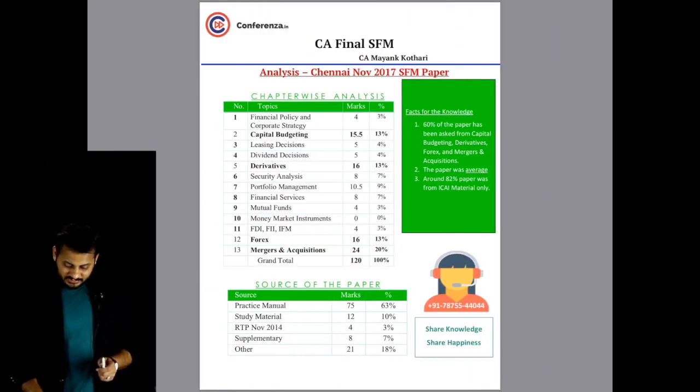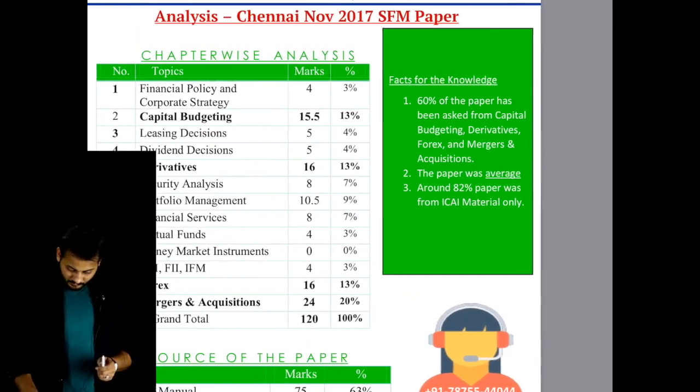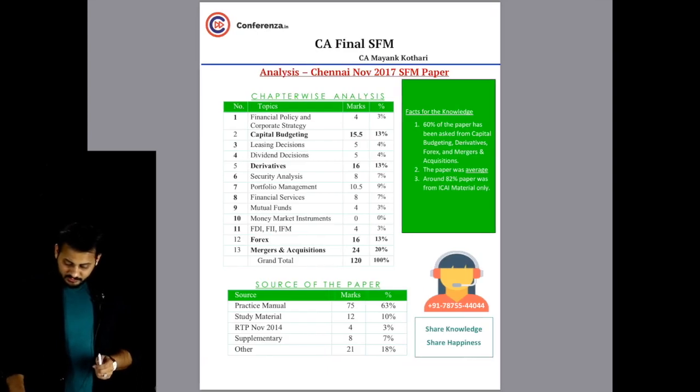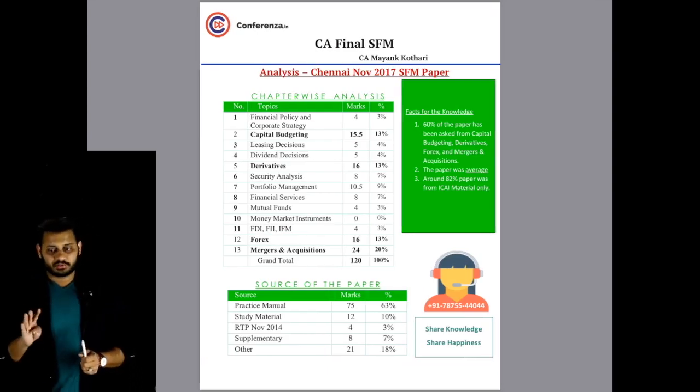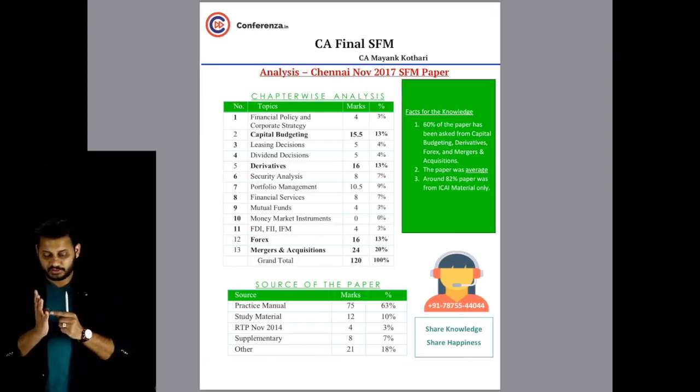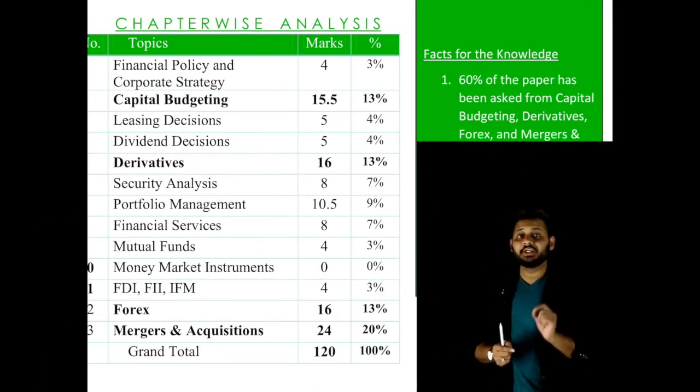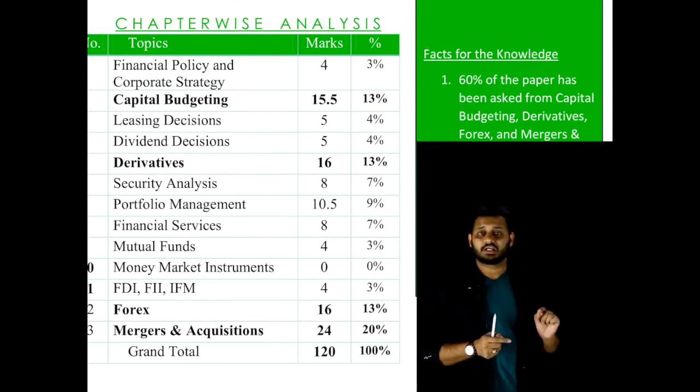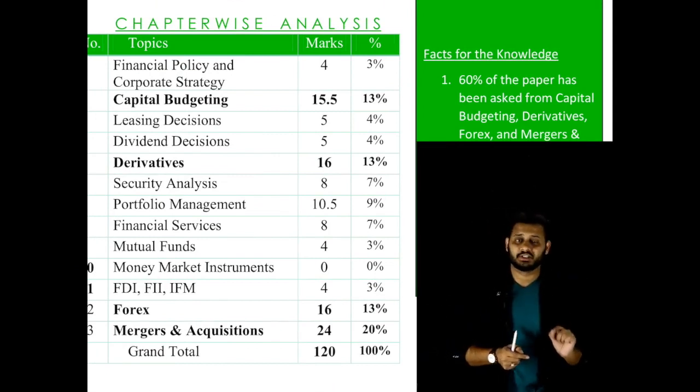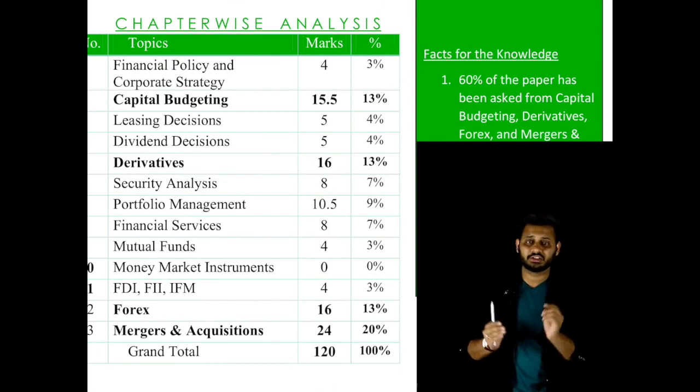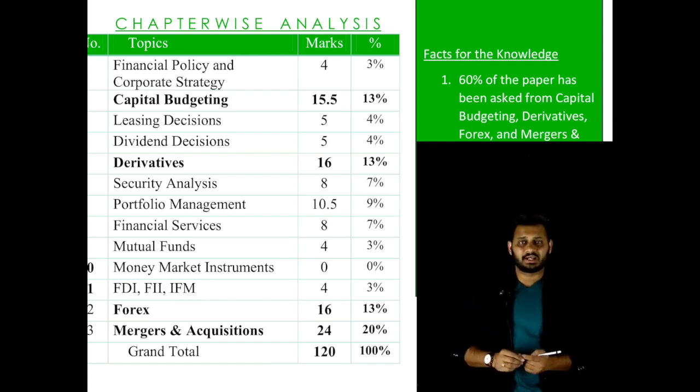Let's discuss about the rest of the analysis. 60% of the paper was from these four chapters: Capital Budgeting, Derivatives, Forex and Mergers and Acquisition. And around 82% of the paper was asked from Institute's materials. So those who have gone through the study material, practice manual or RTP and supplementary, they might have felt this paper as easy.